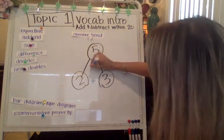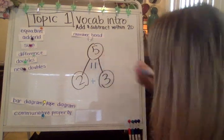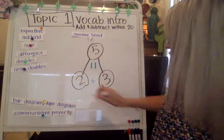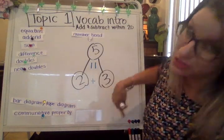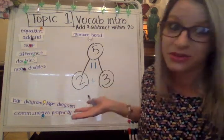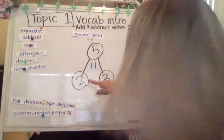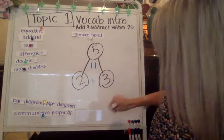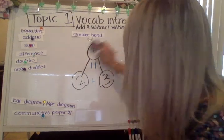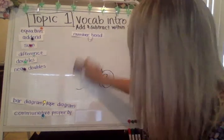So two plus three — if you tilt your head to the side, you can see the equal sign. Two plus three equals five. That's how I would fill in my number bond. Here's another number bond.